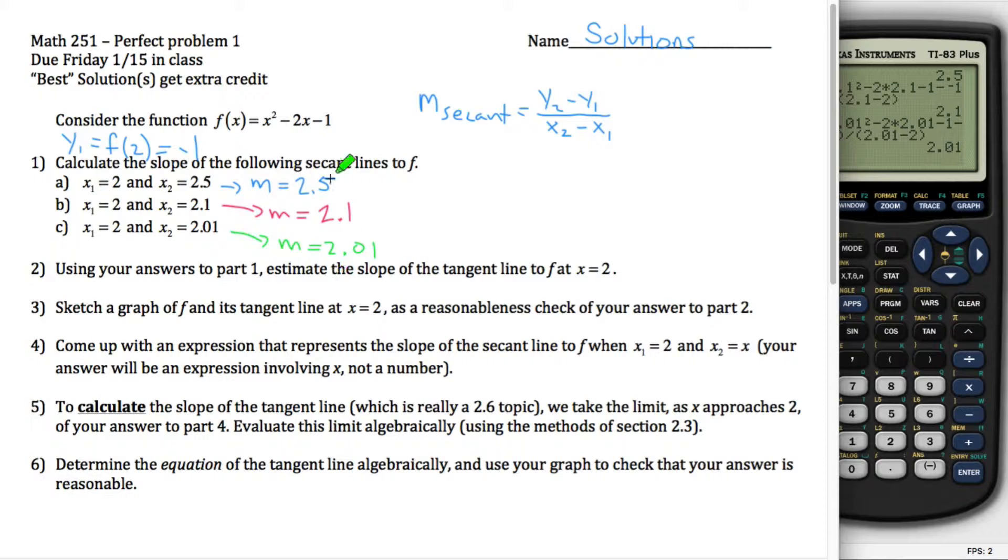So now what I want to do is I want to look at these slopes and kind of think about what's going on. As my second point, x2, is getting closer and closer to my first point x1, it started out kind of far away at 2.5. There's a distance of 0.5 there, but then it got closer at 2.1, it got really close to 2.01. These slopes, which for the case of this function are exactly equal to x2,